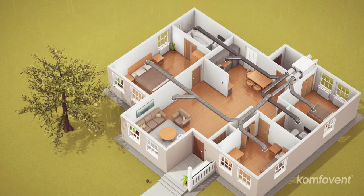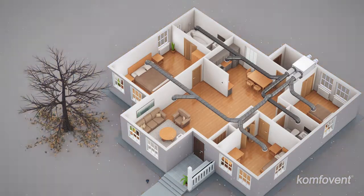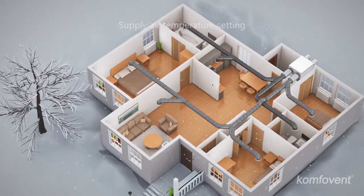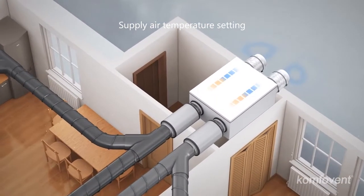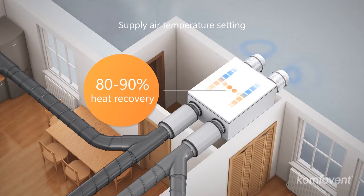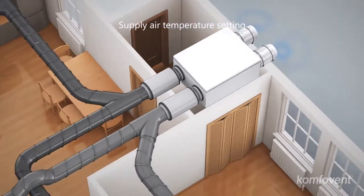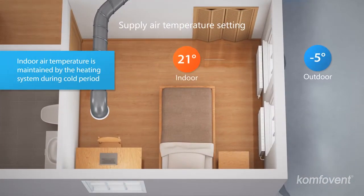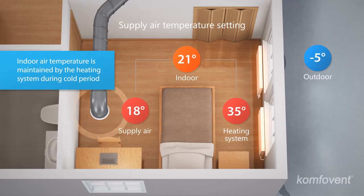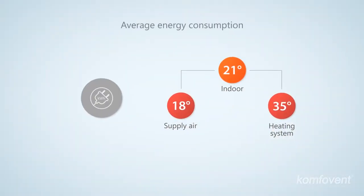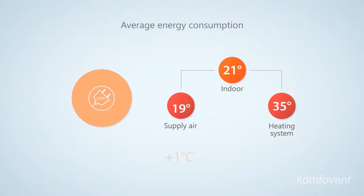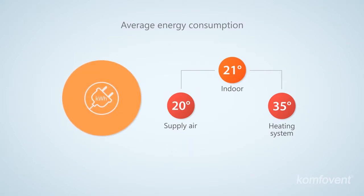The power consumption of the ventilation system directly depends on the air temperature settings. When choosing the air supply temperature, it is important to remember that the air handling unit recovers 80 to 90 percent of heat. A one-degree increase in the air supply temperature raises energy consumption on average by a quarter. Smart control allows you to manage the operation of the electric air heater.